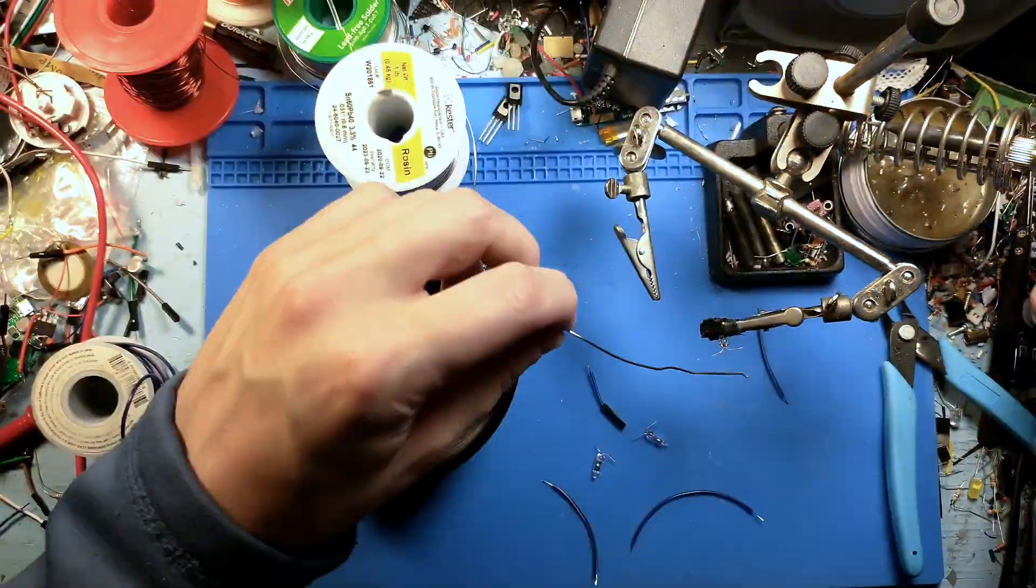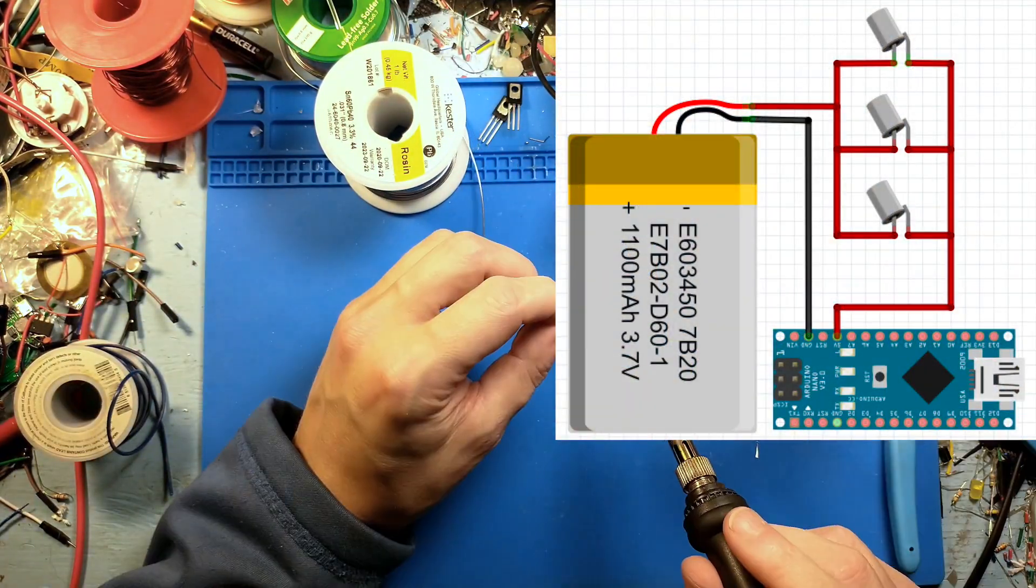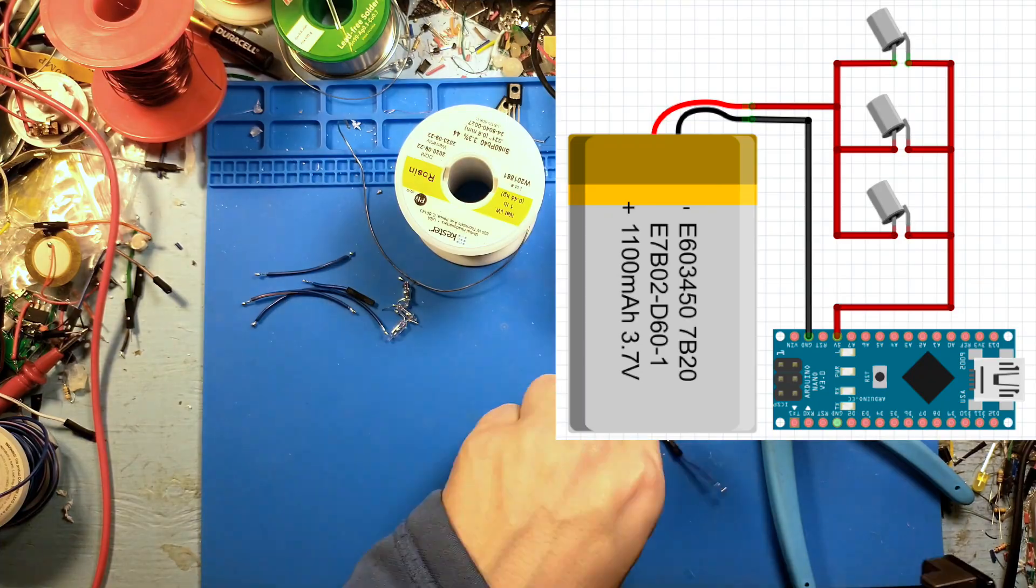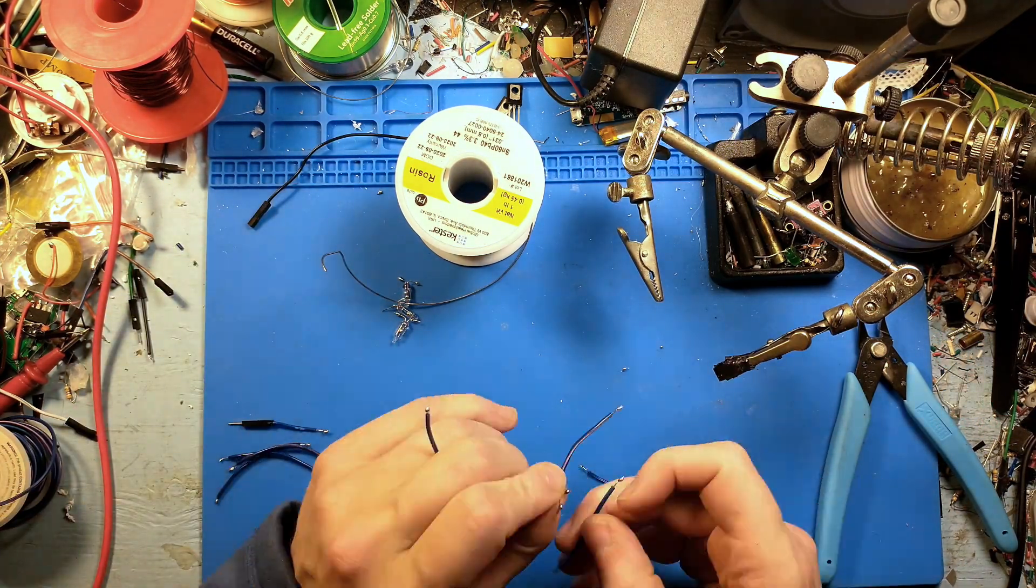I initially tried some ball-bearing tilt switches that I had left over from another project, but they were so jittery, even with three of them in parallel, any slight motion would cut the power. All three would frequently lose contact at the same time. To get consistent power, I used mercury tilt switches.